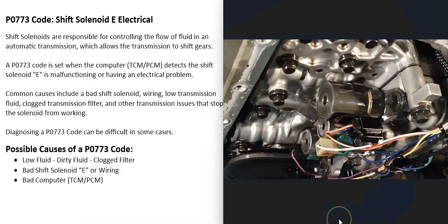The most common cause of a P0773 code is going to be either that shift solenoid E has gone bad and needs to be replaced, or the wiring going to it. If you're only getting this P0773 code, then very likely either that solenoid's gone bad or there's some kind of issue in the wiring.